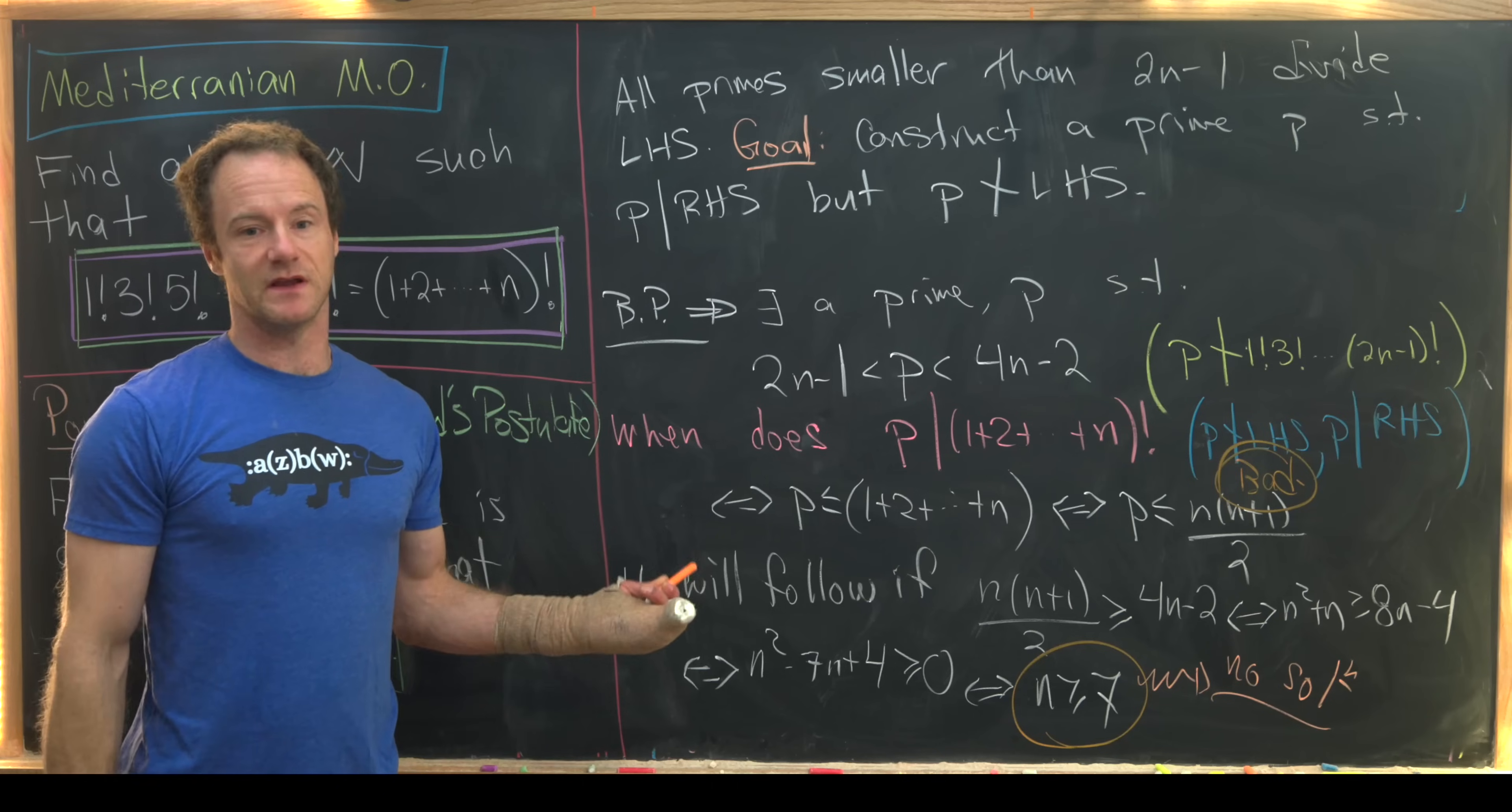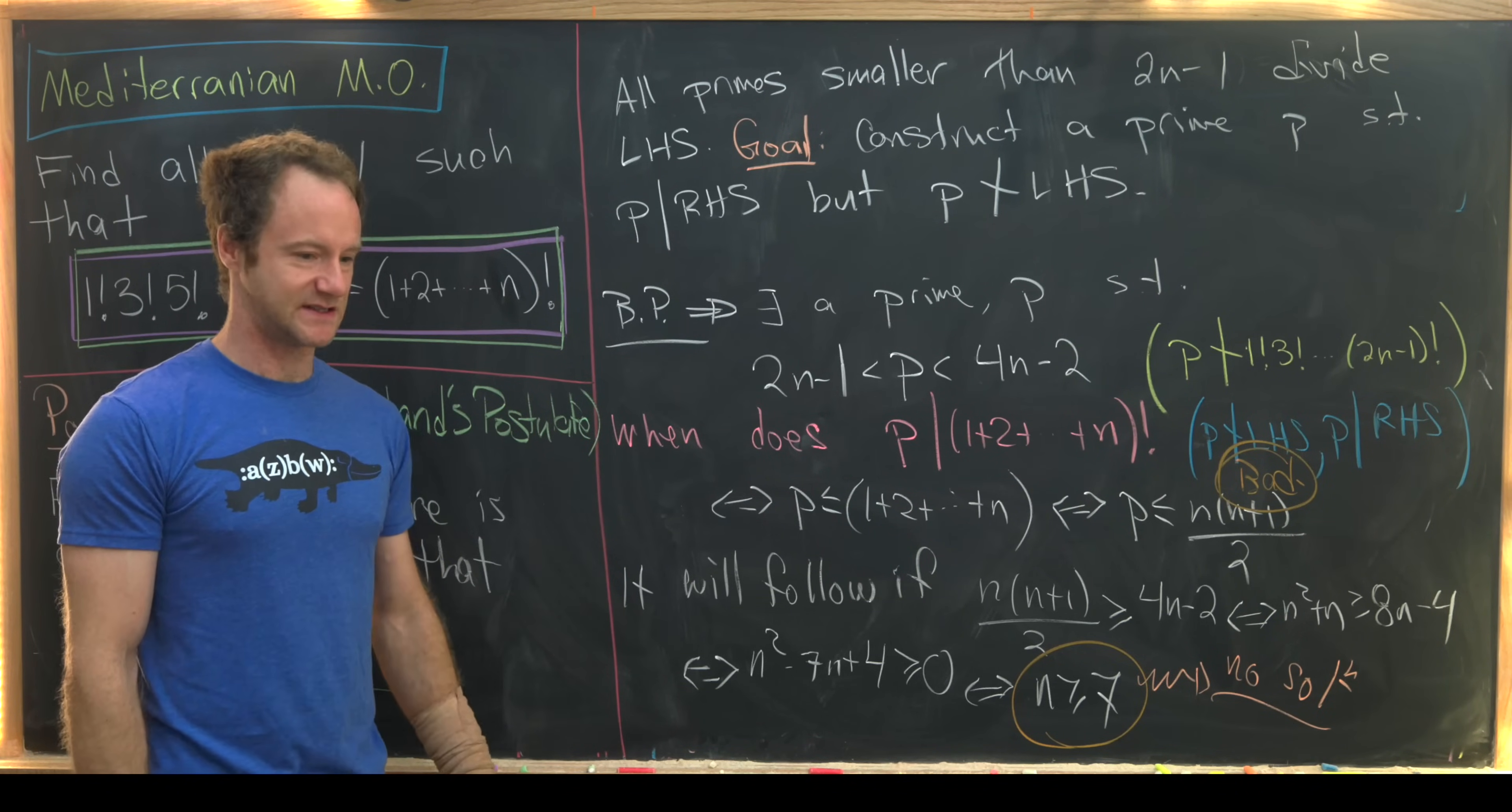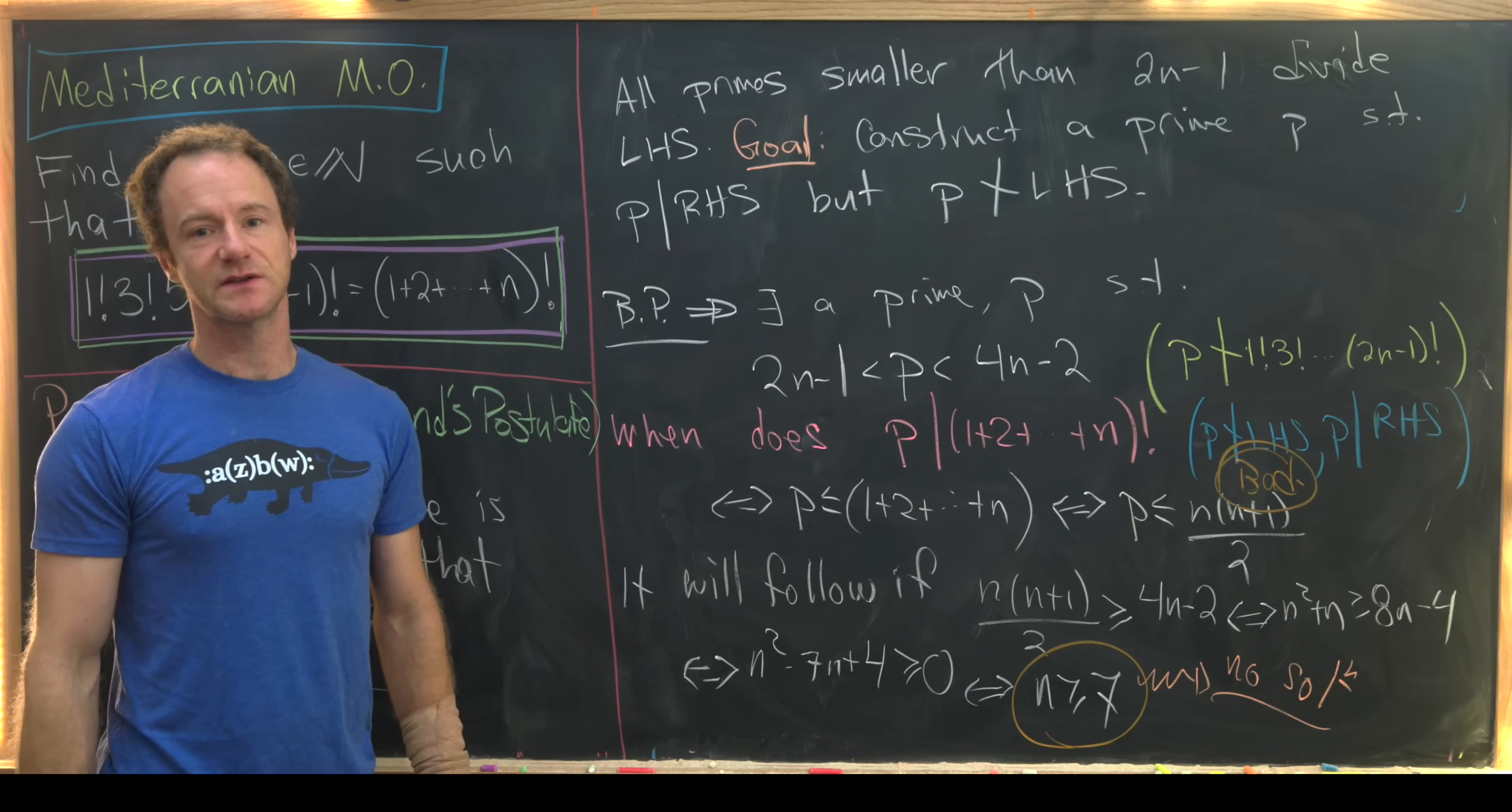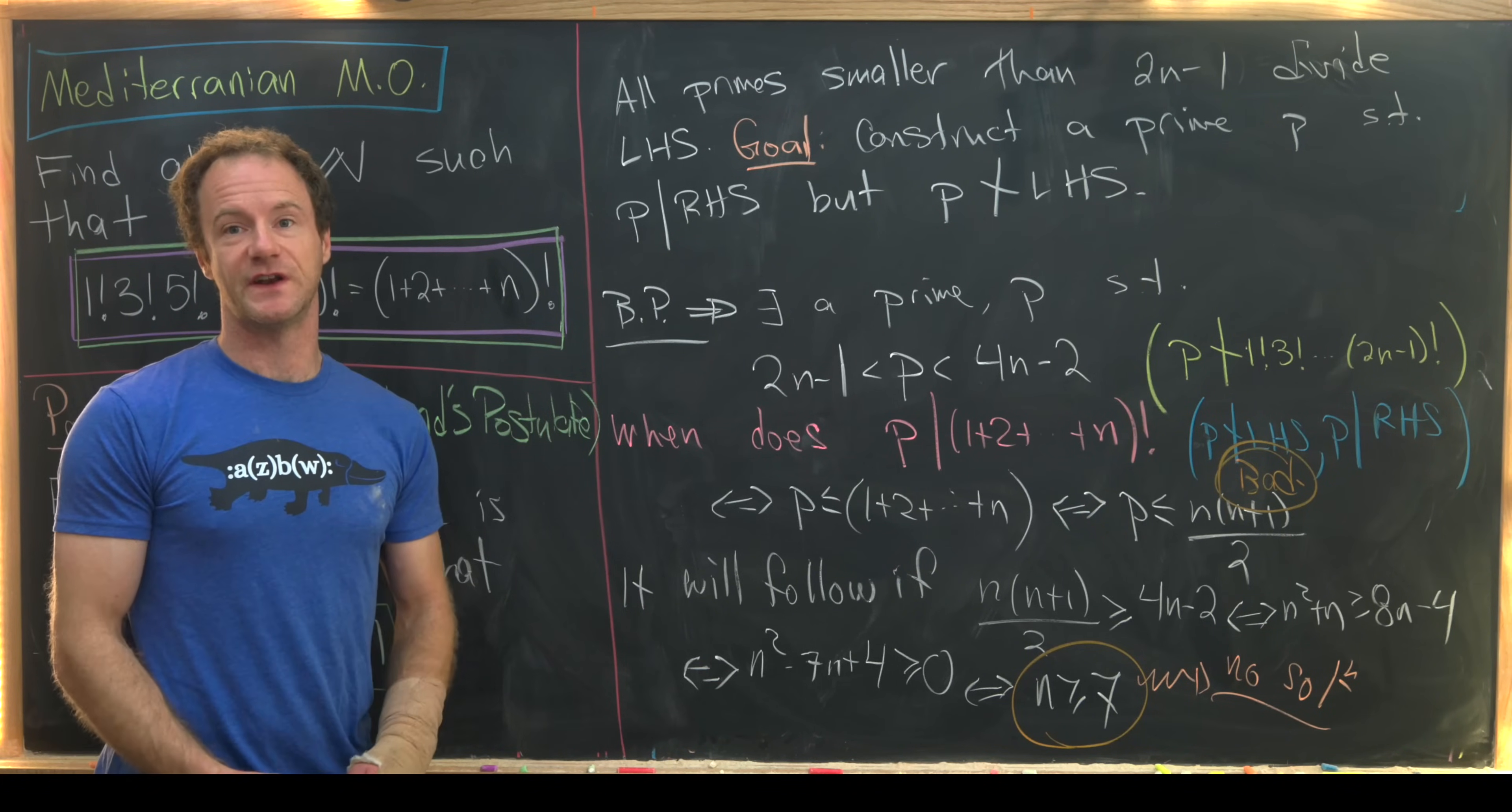So what does that mean? That means the only possible solutions occur when n is between 1 and 6, which is nice because we can easily check those by hand, and that's exactly how we'll finish this one off.